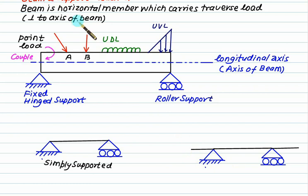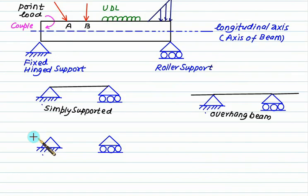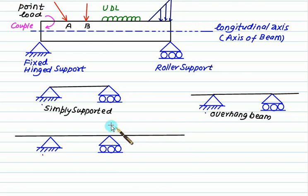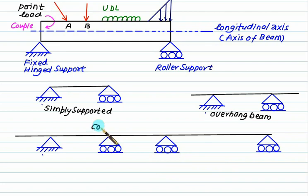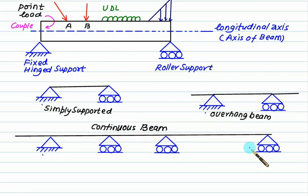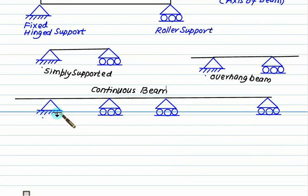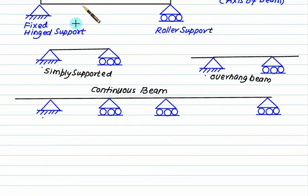If the beam is extended on both sides it is called a double overhang. The third type is a continuous beam, which has more than two supports, with the last span supported using roller supports. Continuous beams are normally used in slabs for flyovers. We also introduce the cantilever beam, which is normally used in a diving board in a swimming pool.